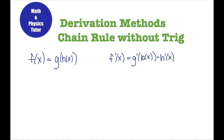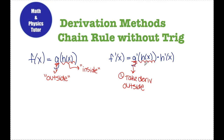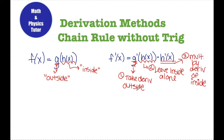Now this looks weird and it's kind of hard to remember, so I like to think of this derivative in words. I look at g of x as the outside function and h of x as the inside function. The chain rule says: take the derivative of the outside, leave the inside piece alone, and multiply by the derivative of the inside.